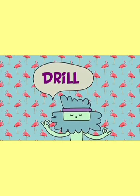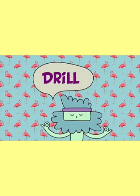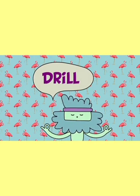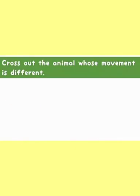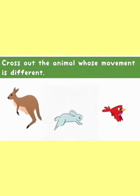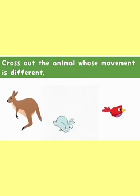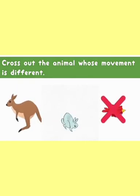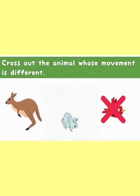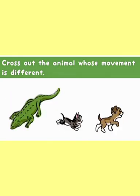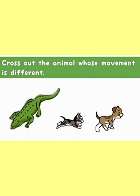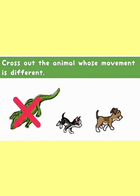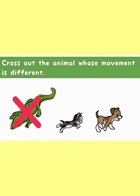Now let's have a drill. Let's cross out the animal with a different movement. Cross out the animal whose movement is different. We have kangaroo, rabbit, and bird. Which one is different?